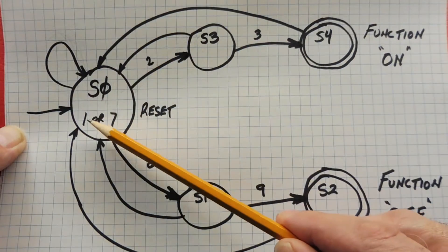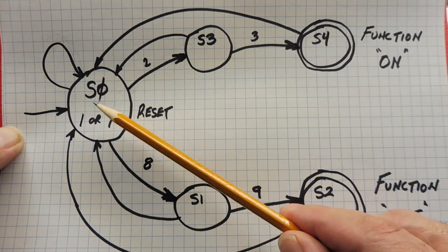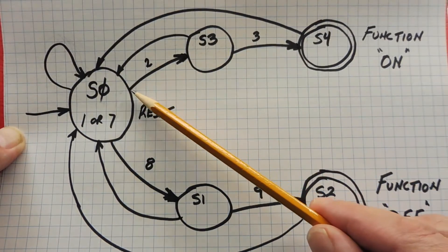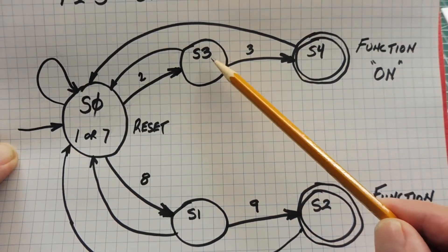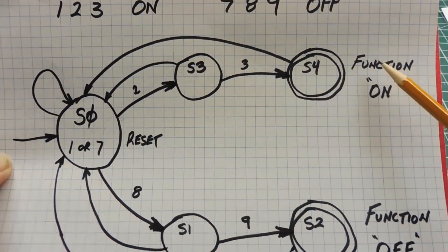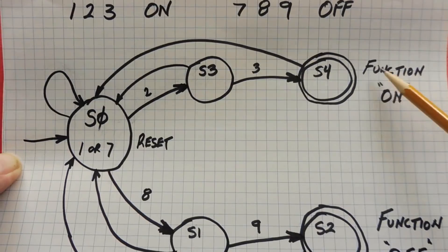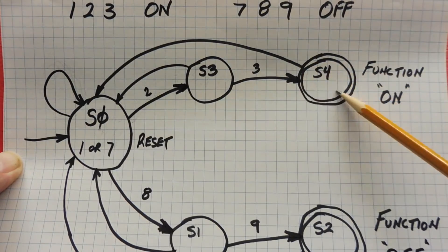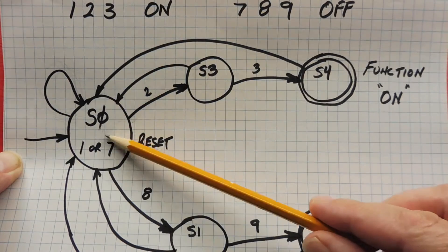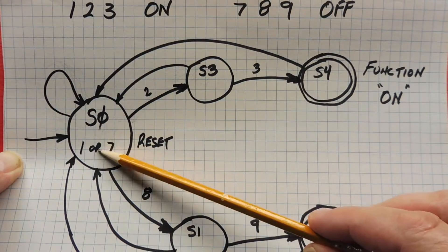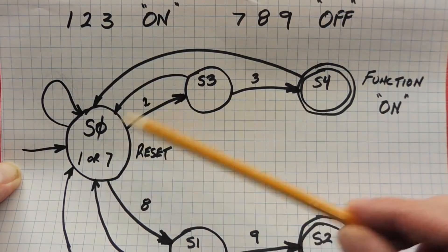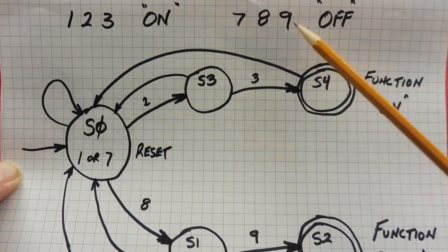If it gets a 1 in state 0, then in state 3 it will be looking for a 2. And if it gets a 2, in state 4 it will be looking for a 3. And if it gets a 3, then the function will go on. This is our accepting state with the double circles. Then it will go back to state 0, the reset state, waiting for the next keypad sequence — which will be 7, 8, 9 to turn it off.